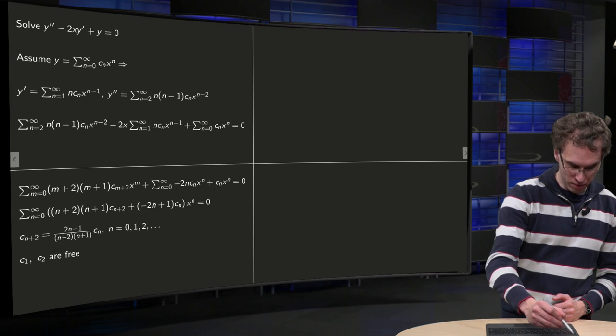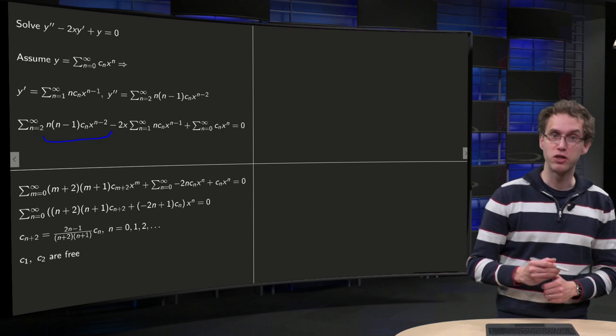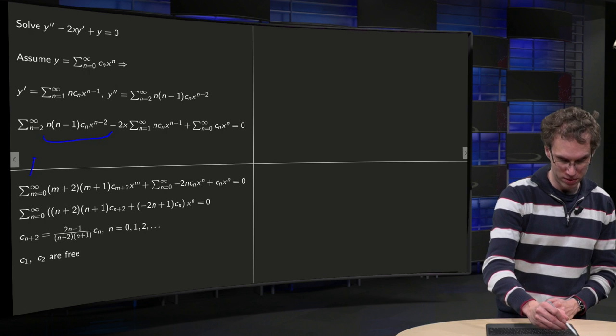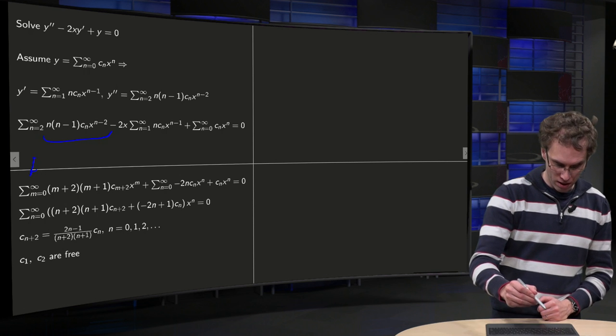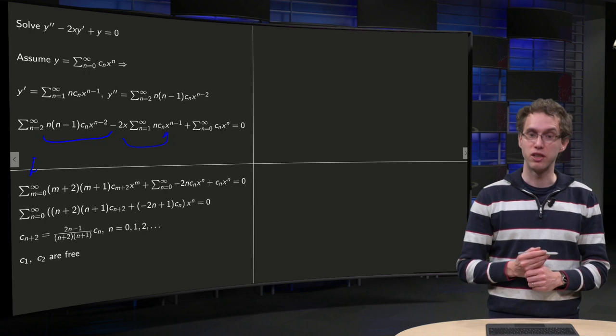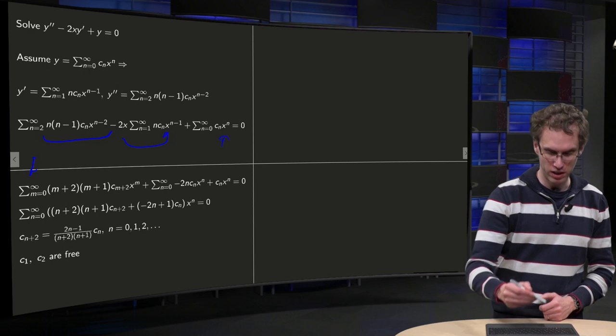For this term over here we have x to the power n - 2, so we set n - 2 = m, and then m summed from 0 to infinity. And for the other term we can just take the x in and we get an x to the power n. We have x to the power n here as well.